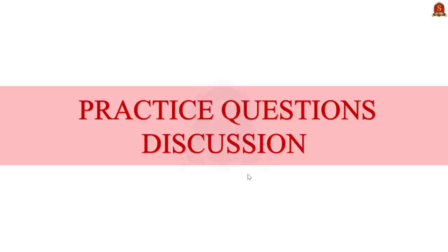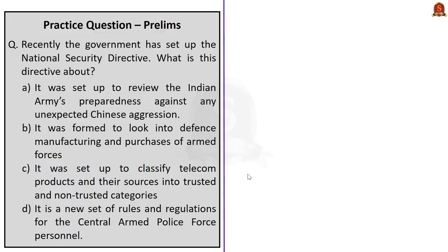Practice question: Recently, the government has set up the National Security Directive. What is this directive about? Option A — it was set up to review the Indian Army's preparedness against Chinese aggression. Option B — it was formed to look into defense manufacturing and purchases. Option C — it was set up to classify telecom products and their sources into trusted and non-trusted categories. Option D — it is a new set of rules for Central Armed Police Force personnel. The correct answer is option C.